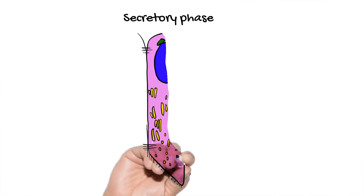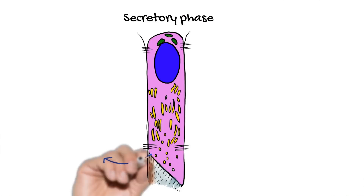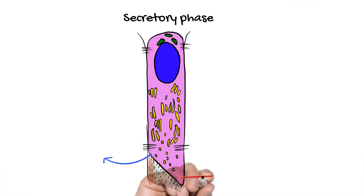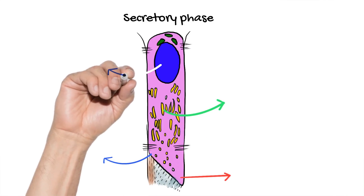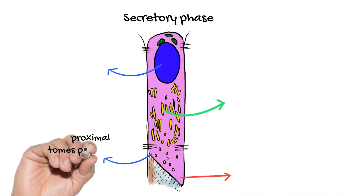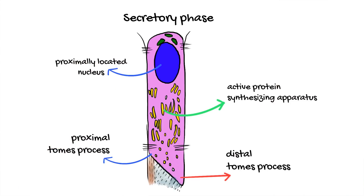Once the initial layer of enamel forms, the cell develops a cytoplasmic extension at its distalmost part — this is called the Tomes' process. At this point, both the proximal and distal junctional complexes develop. Once the distal Tomes' process develops, the production of enamel matrix occurs in two sides: firstly, the area around the distal junctional complexes from the proximal Tomes' process produces an organic matrix that forms a pit surrounding the cell.